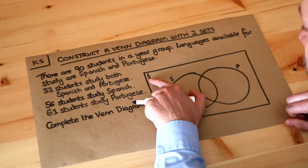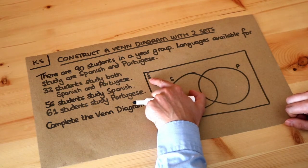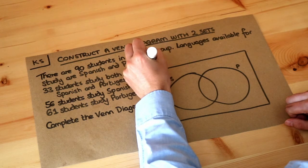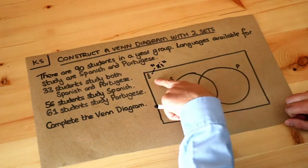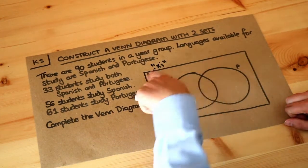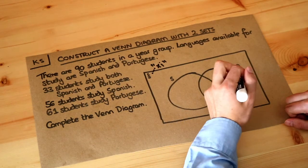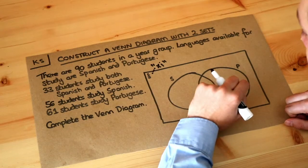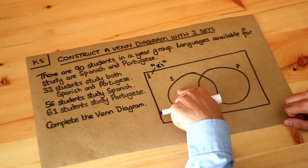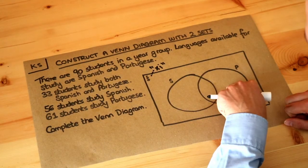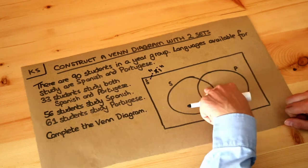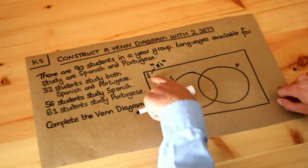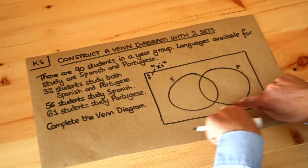The symbol labeling the rectangle is the Greek letter xi. The rectangle represents everyone of interest — in this case, all 90 students. Of those 90 students, some study Spanish only, some study Portuguese only, some study both, and some study neither. The rectangular box labeled xi represents all students.